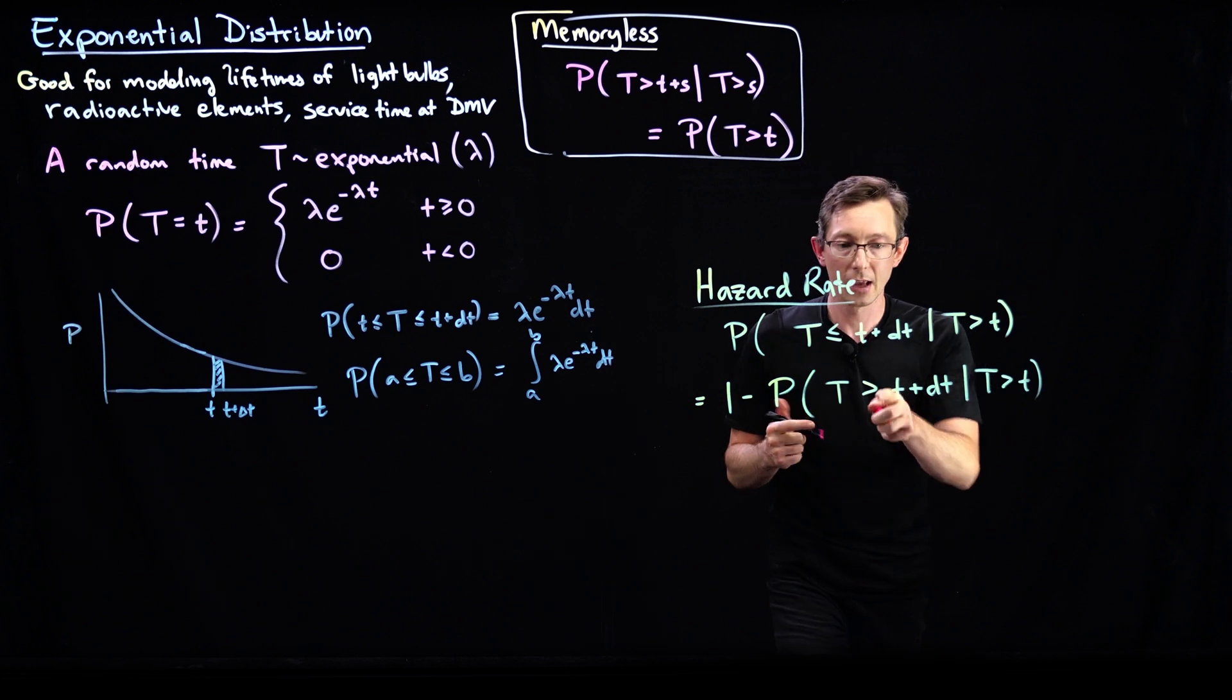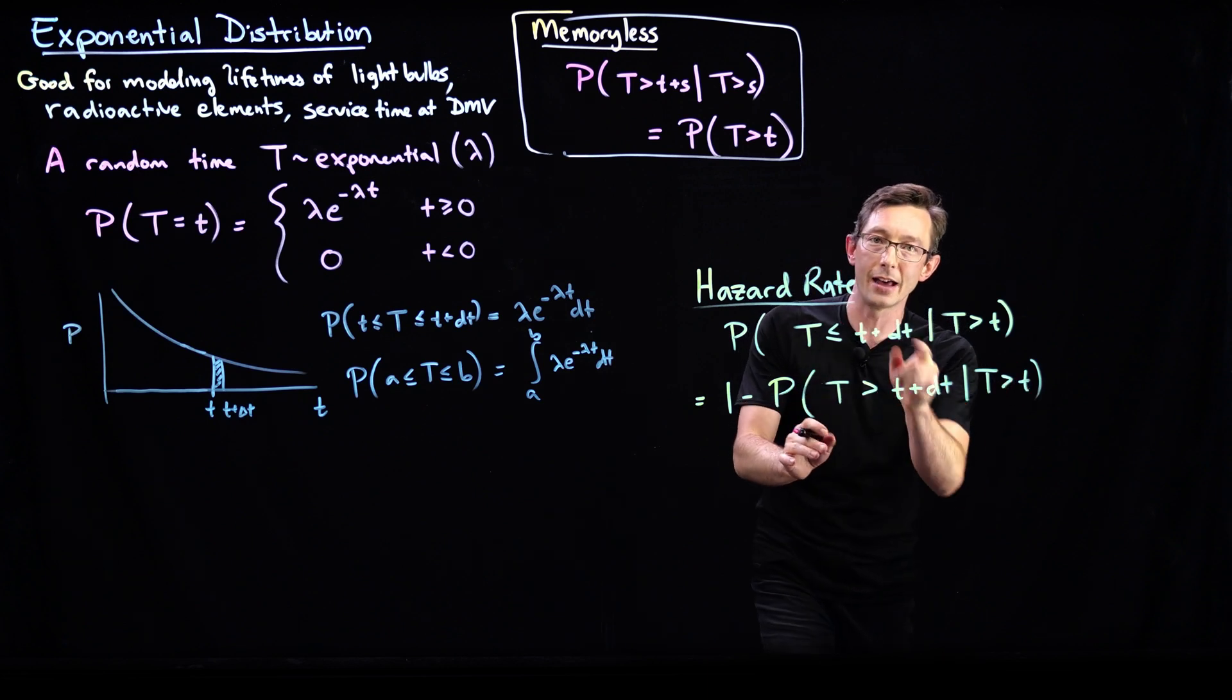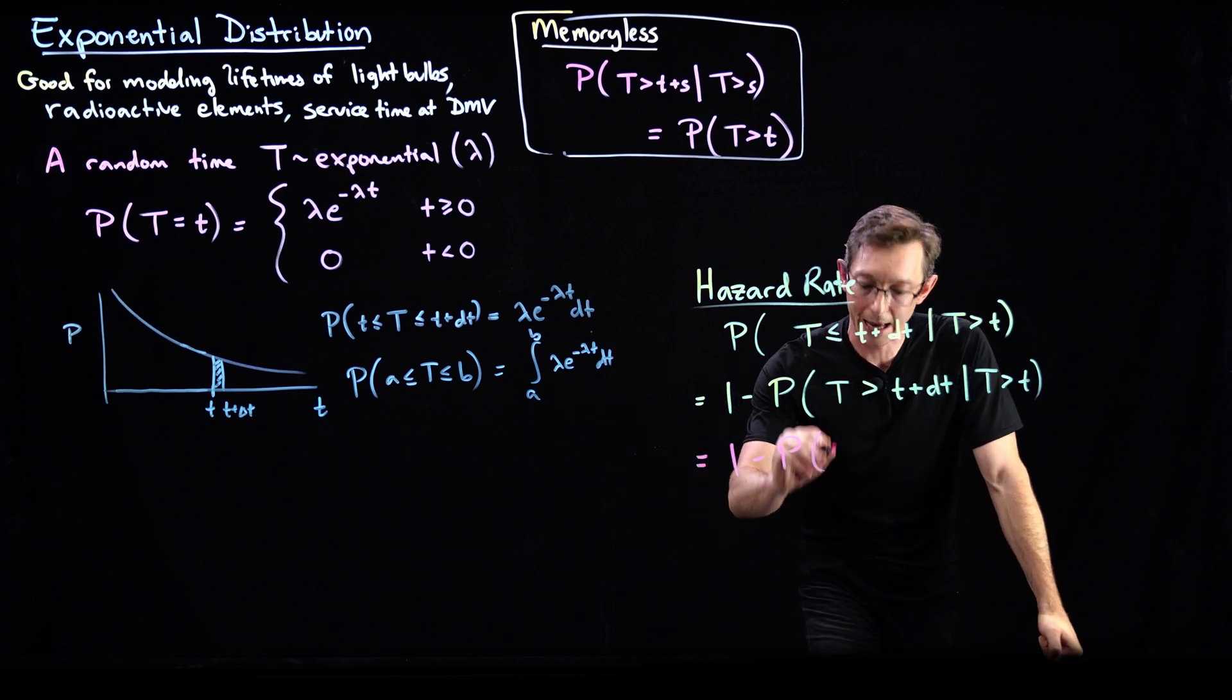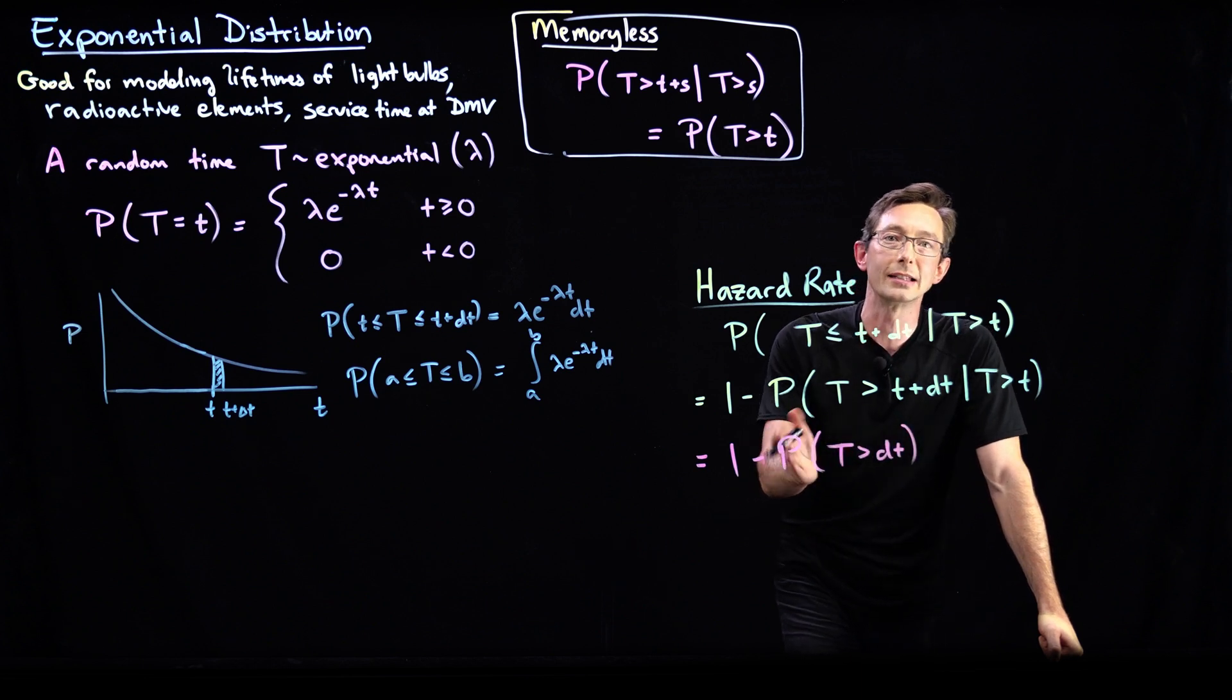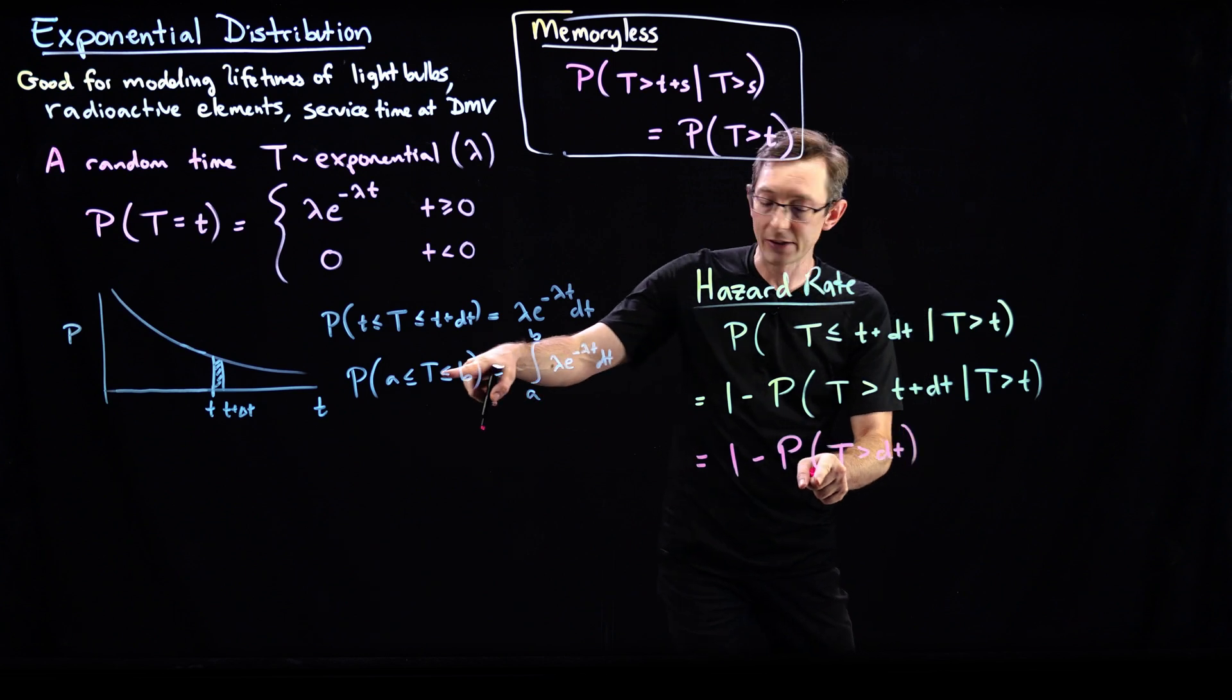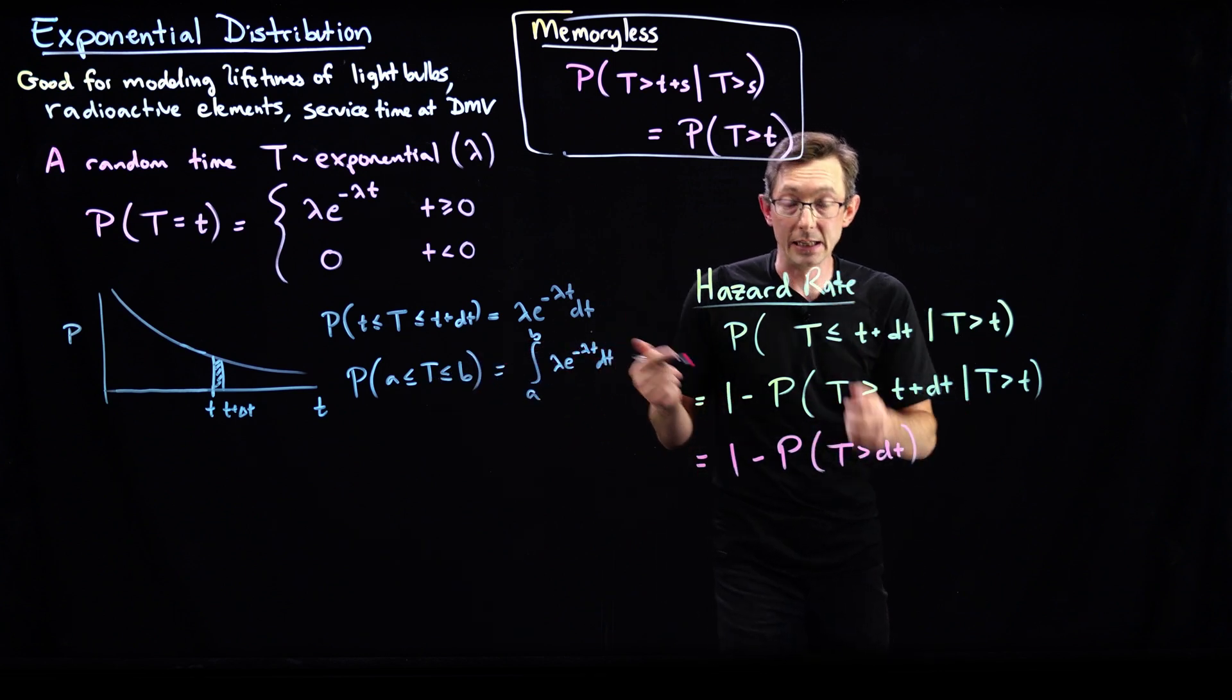So I'm going to switch to pink here. And if I've already lasted little t, the chances of me lasting another dt is just 1 minus P that T is greater than a little delta t. So the probability that T is greater than delta t. And that is the cumulative distribution function evaluated at little dt.